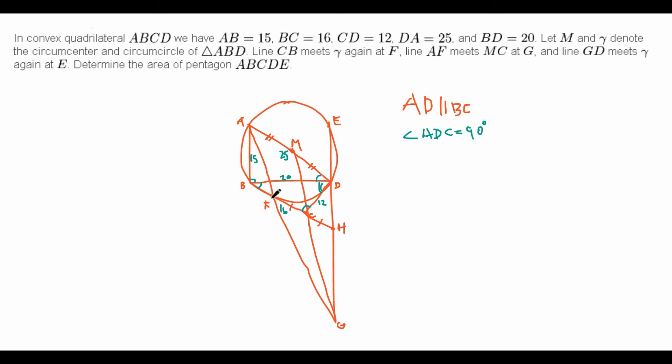Now, this is particularly nice, because if we connect FD, then that means that since FC is equal to CH, and the fact that angle FCD is 90 degrees, we know that FDH, this triangle, is, in fact, isosceles.